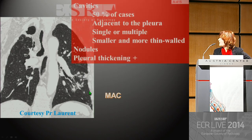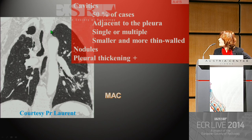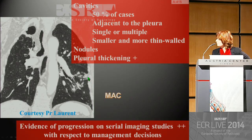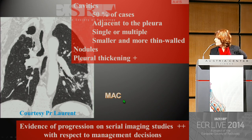Here is an example of a classical form of non-tuberculous mycobacterial infection. You can see cavities associated with nodules — a typical presentation. Cavities are seen in 50% of cases; in most cases they are adjacent to the pleura, may be single or multiple, bilateral, and are frequently smaller and thinner-walled than those seen in TB. Pleural thickening may be seen; conversely, pleural effusion is rare compared to TB. Evidence of progression on serial imaging studies is very important with respect to management decisions, as was the case in this patient proven to have a MAC infection.